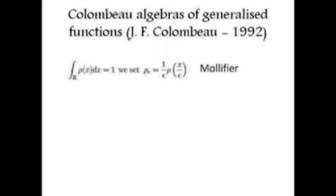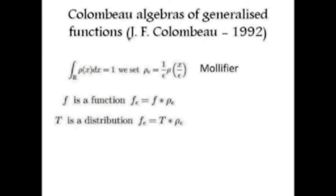We start from a function rho which is smooth and has integral one. From this we define a function rho_epsilon, called the mollifier. If f is a function, we define f_epsilon as the convolution of f with rho_epsilon. If T is a distribution, we define f_epsilon as the convolution of T with rho_epsilon. Note that as epsilon goes to zero, rho_epsilon goes to delta, and f_epsilon goes to f or T depending on which object we started with.